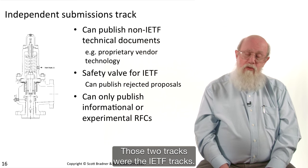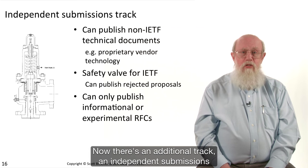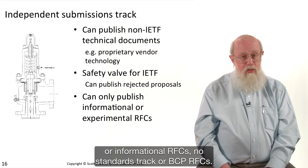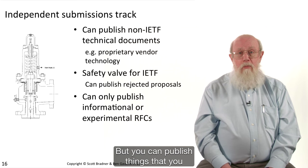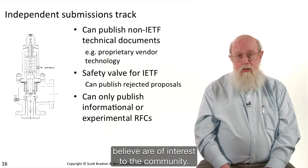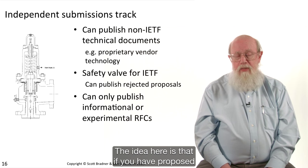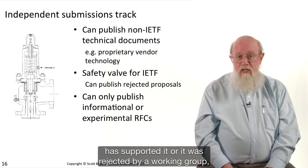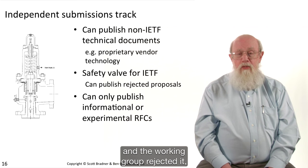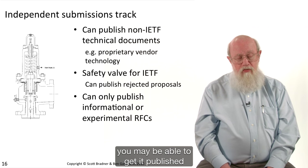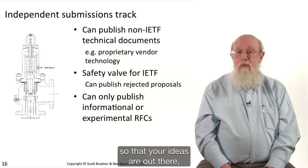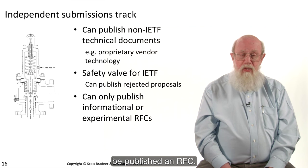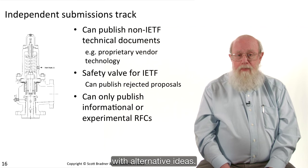Now there's an additional track — the independent submissions track. Those first two were the IETF tracks. You cannot publish standards on the independent submissions track; you can only publish experimental or informational RFCs — no standards track or BCP RFCs. But you can publish things you believe are of interest to the community. It's a safety valve: if you've proposed a great idea and no working group has supported it, or it was an alternative proposal that a working group rejected, you may be able to get it published through the independent submissions track so your ideas are out there as an RFC — not the work of the IETF, but still published.